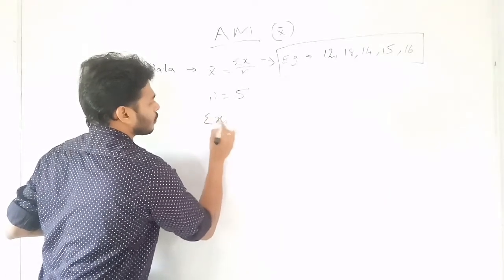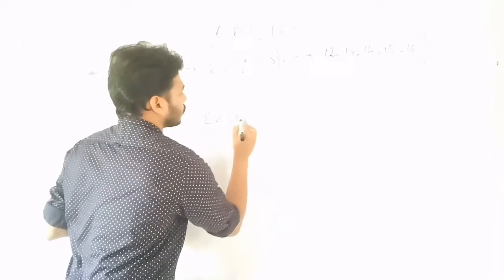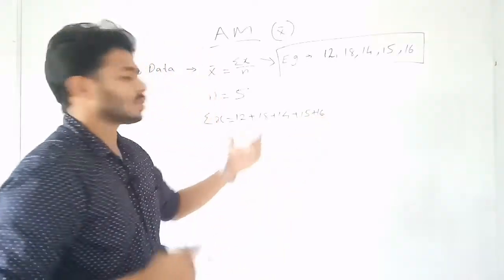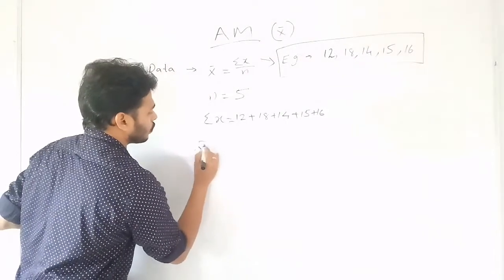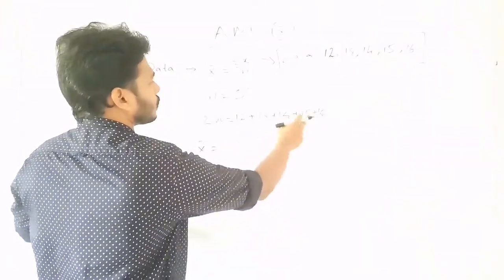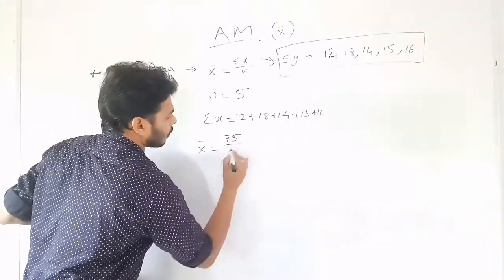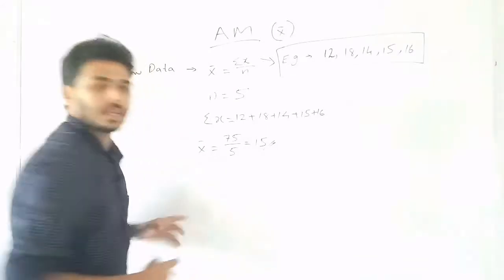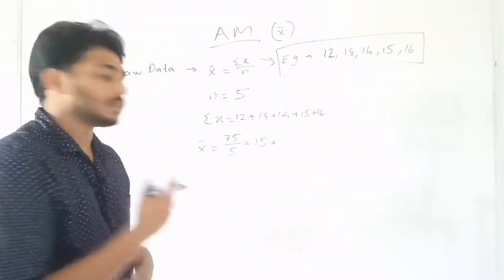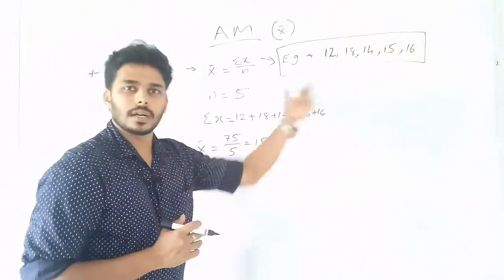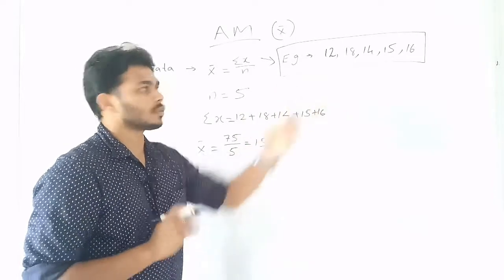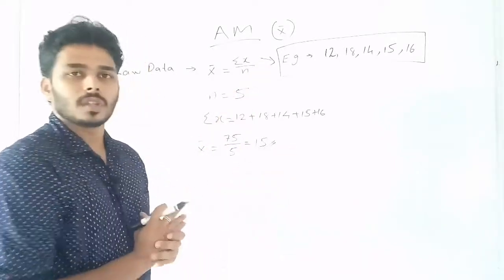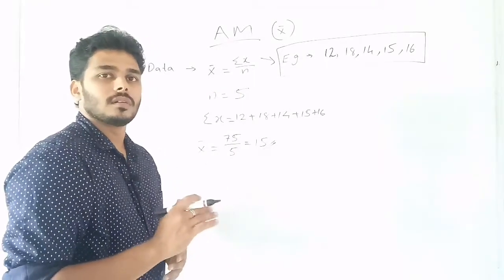Sigma X is more important. That means 12 + 18 + 14 + 15 + 16. This is Sigma X. Substituting into the equation: x̄ = (12 + 18 + 14 + 15 + 16) / 5 = 75 / 5 = 15. That is the answer for the raw data arithmetic mean example.